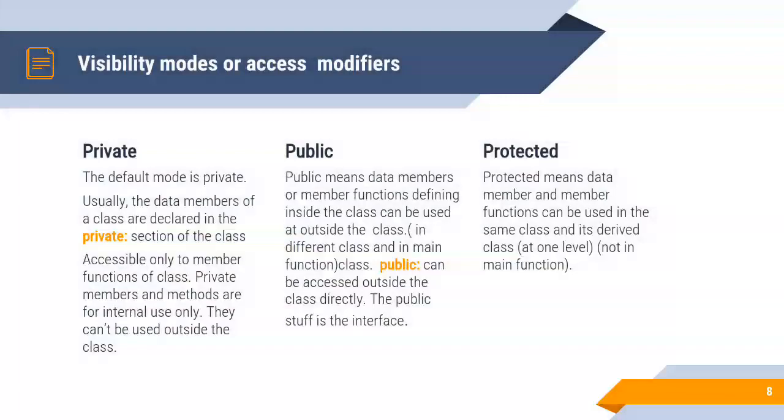Public means data members or member functions defined inside the class can be used outside the class because public means global. In different class and in main function the members can be accessible. Public can be accessed outside the class directly. The public stuff is the interface. The public members are global.